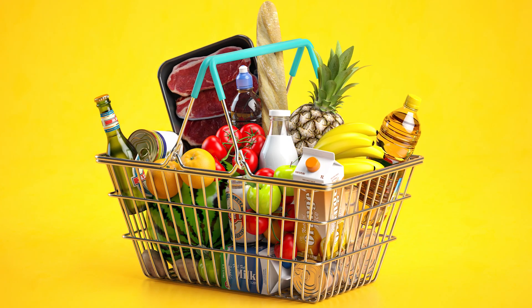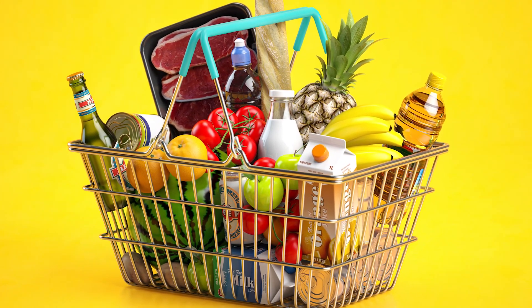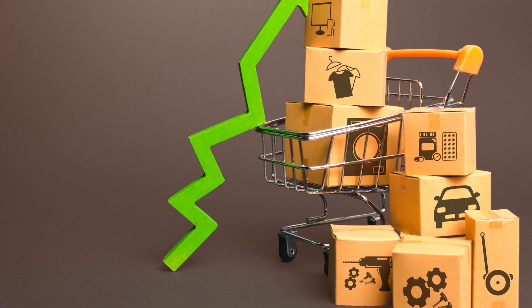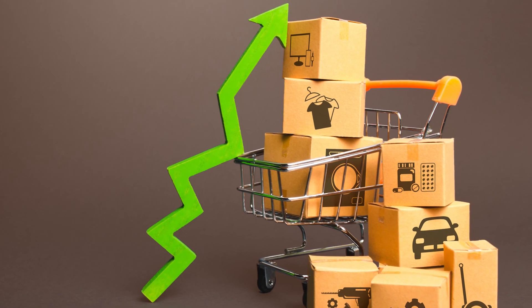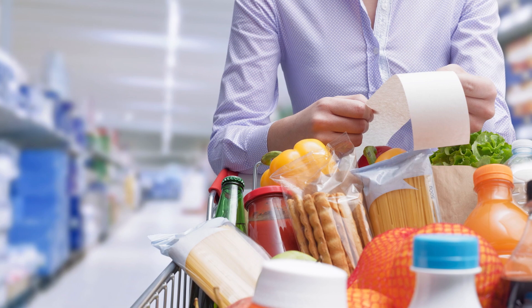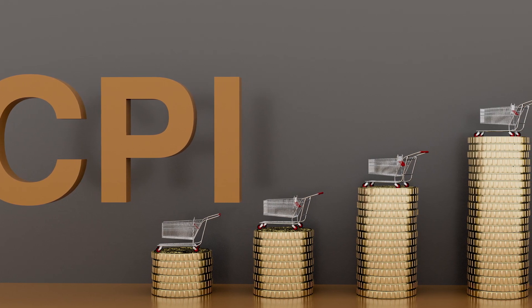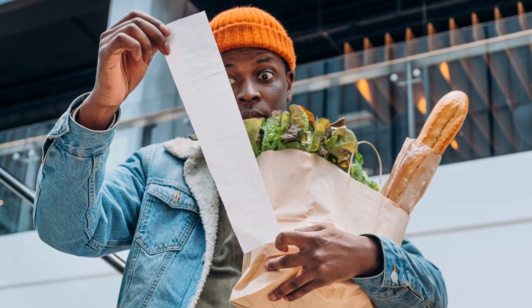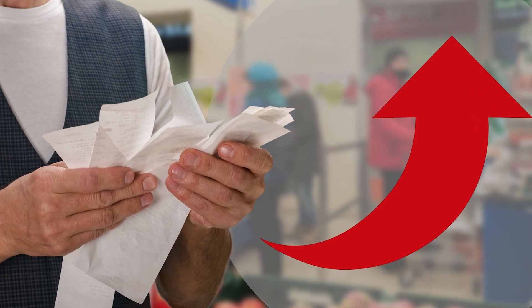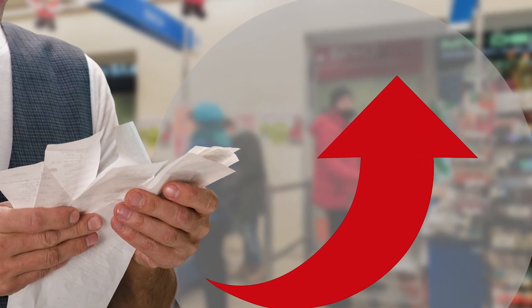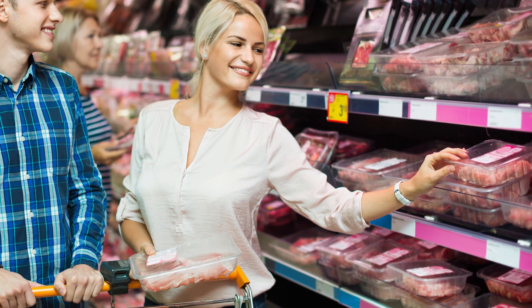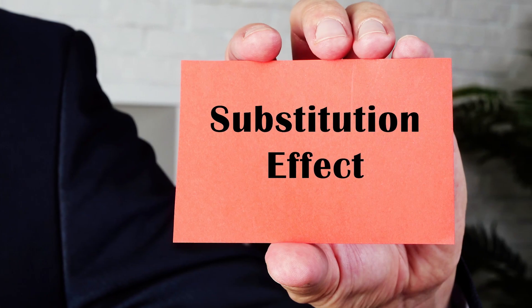CPI is calculated by taking a bucket of what Americans typically buy in any given day at the grocery store or anywhere else. That bucket doesn't change much — the prices change, but what's in the bucket stays relatively fixed. When prices get too high, people say, 'Normally I'd buy ground beef, but have you seen the price of ground beef?' So you might buy ground turkey, ground chicken, or ground pork instead. Those tend to be lower in price — that's called the substitution effect.